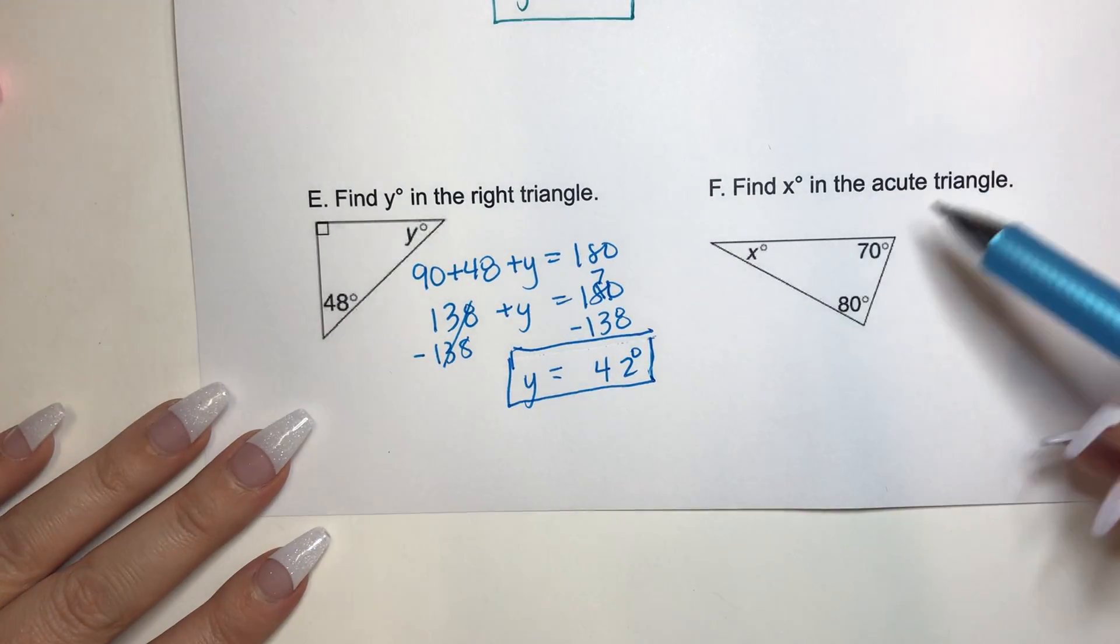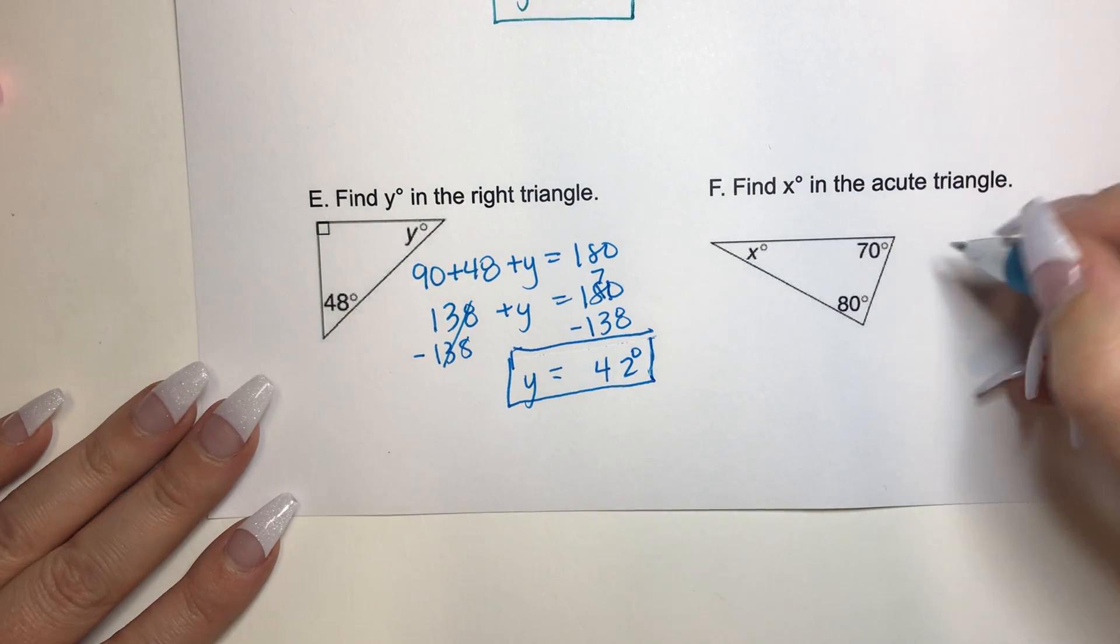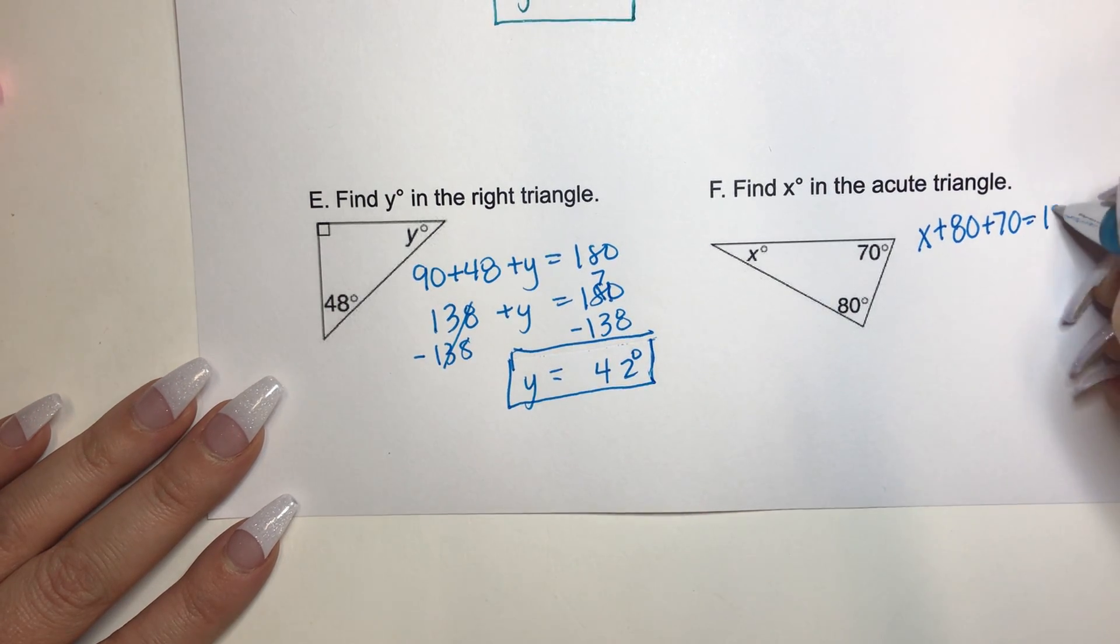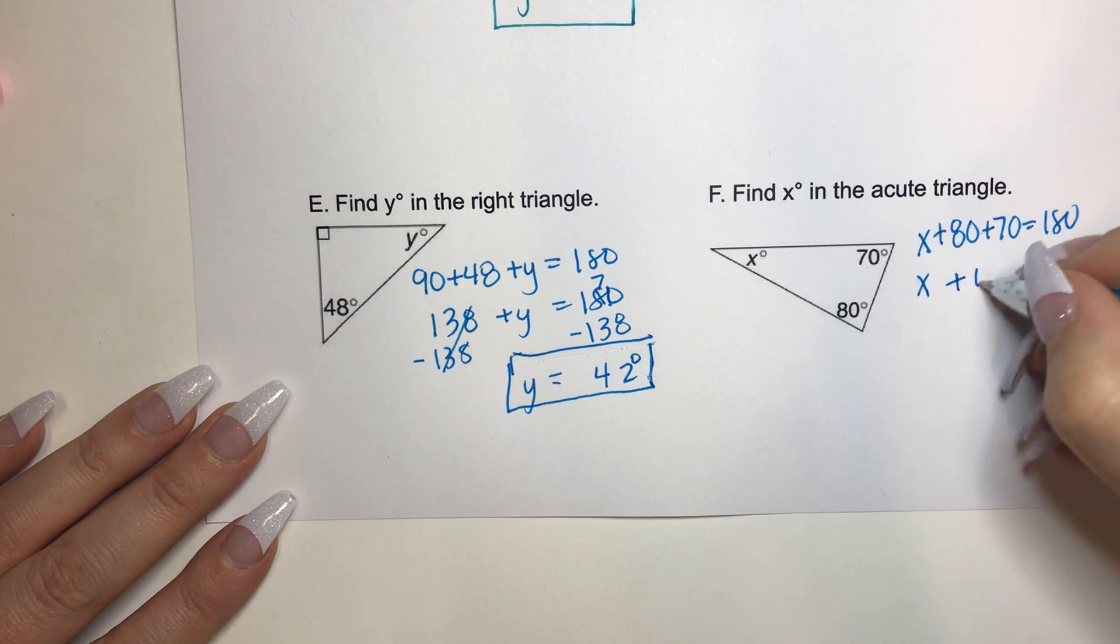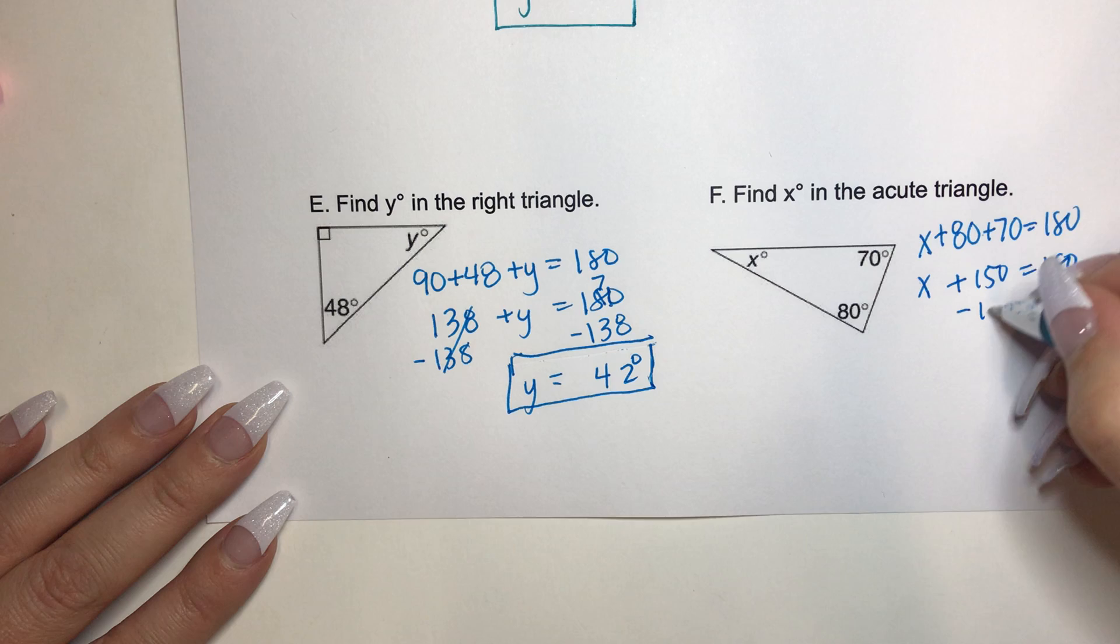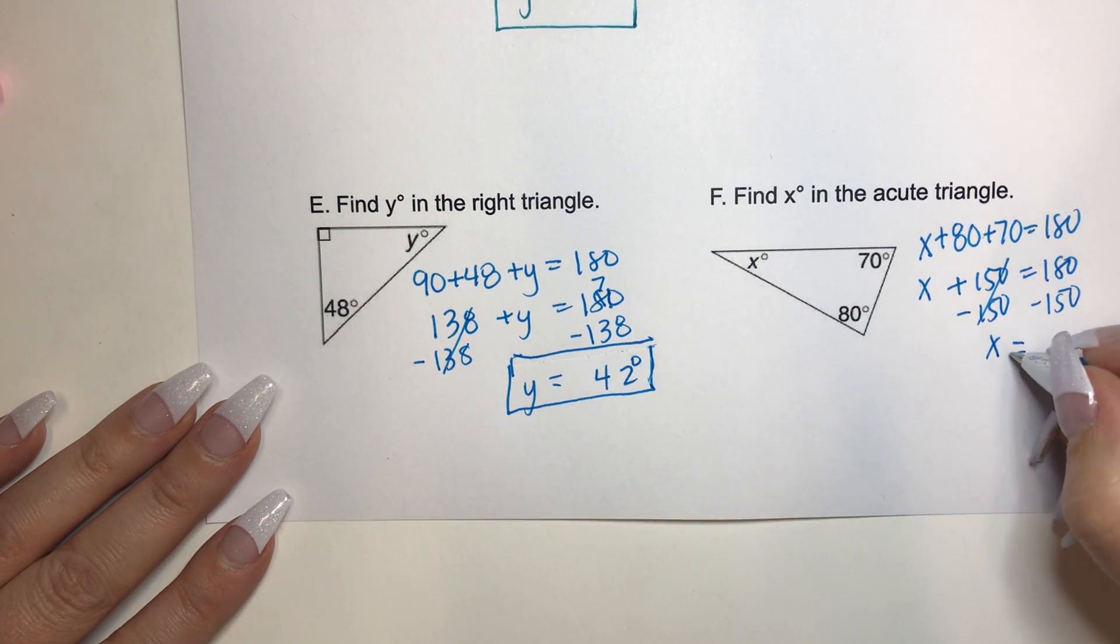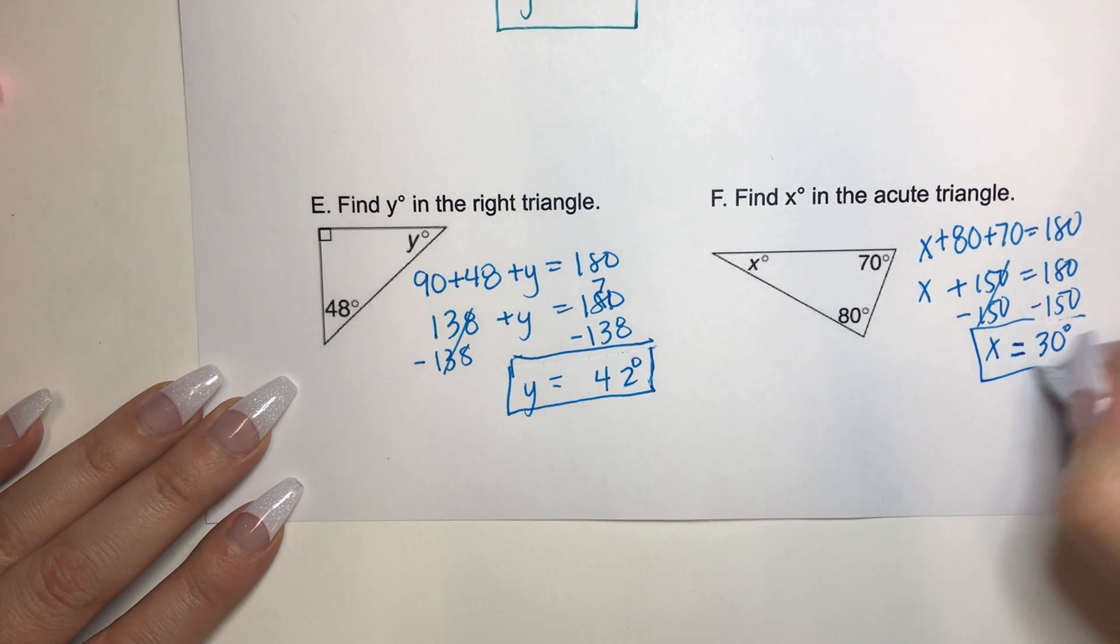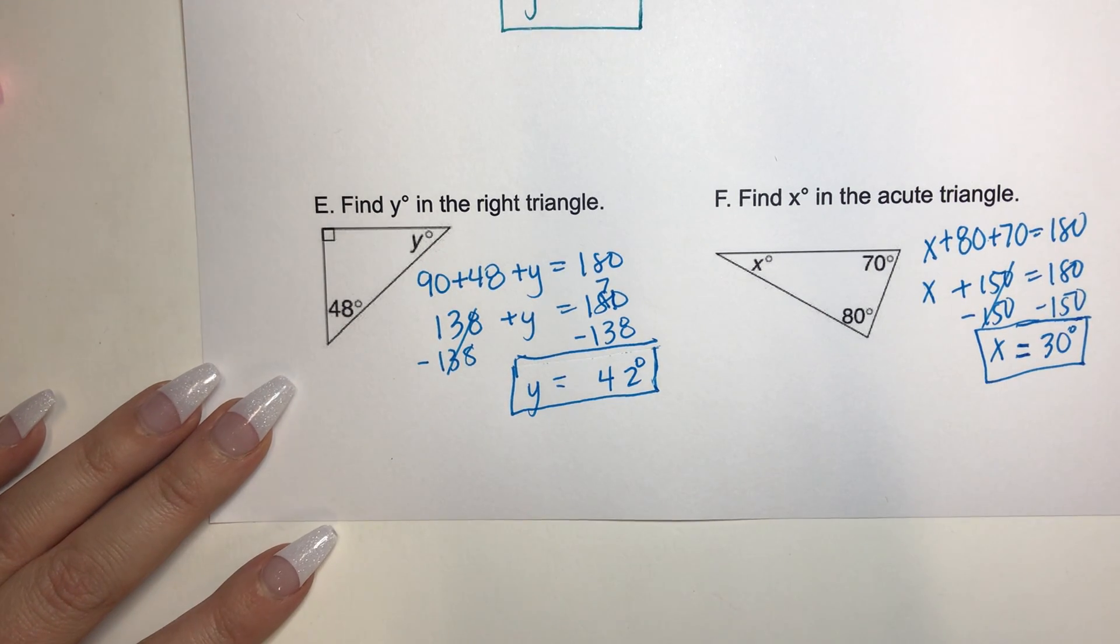And on to the last one. It says find X in the acute triangle. So we have X plus 80 plus 70 equals 180. The triangle sum theorem. 80 plus 70 is 150. And then just the subtraction property of equality to both sides, that cancels. X equals 30 degrees. If you got that right, yoka-dinki-mashda. You did a wonderful job. And I will see you for example two in a little bit.